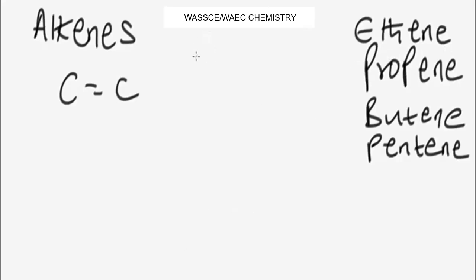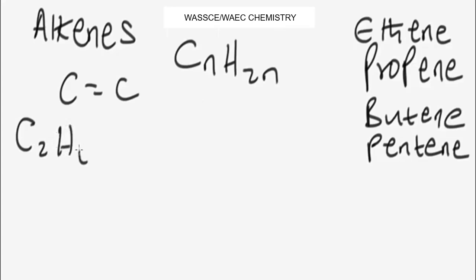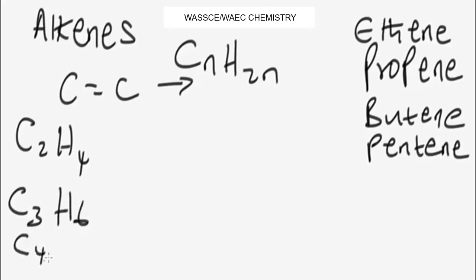The general formula for alkenes is CnH2n. So we can see that ethene has two carbon atoms, so the formula will be C2H4. Propene has three carbon atoms so its formula will be C3H6. That of butene will be C4H8 and that of pentene will be C5H10.